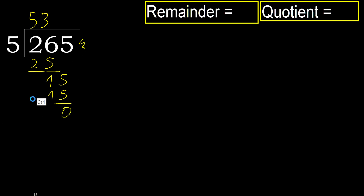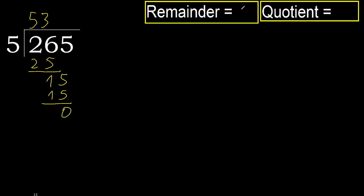There is no next number, therefore finish it. 265 divided by 5 is 53.